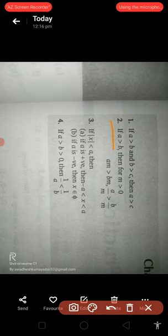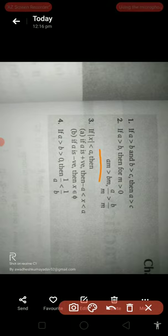If a greater than b and m greater than 0, if a greater than b times m, then a divided by m greater than b divided by m.